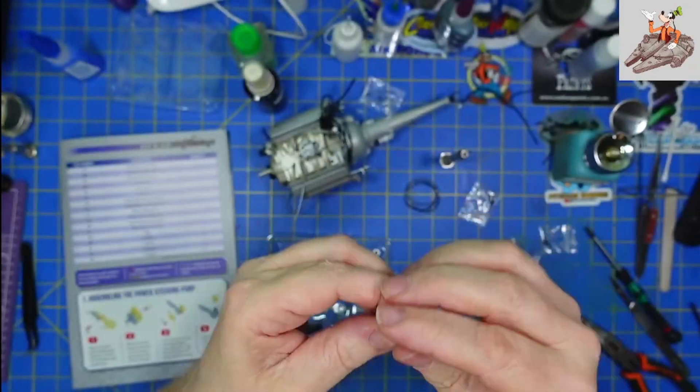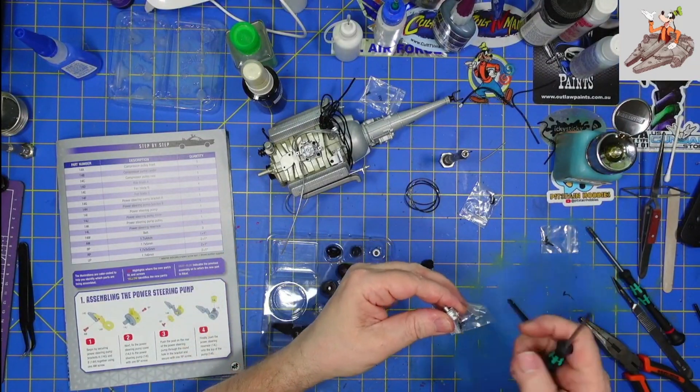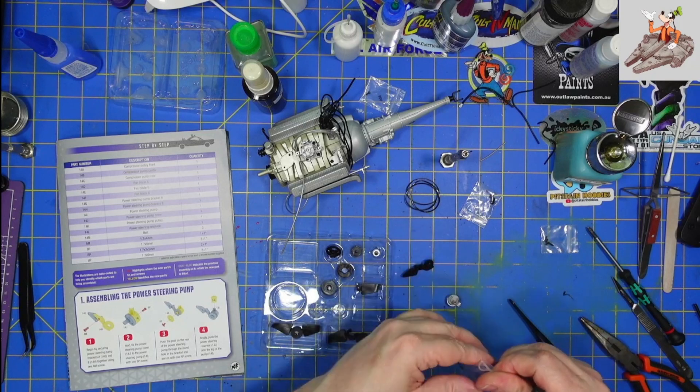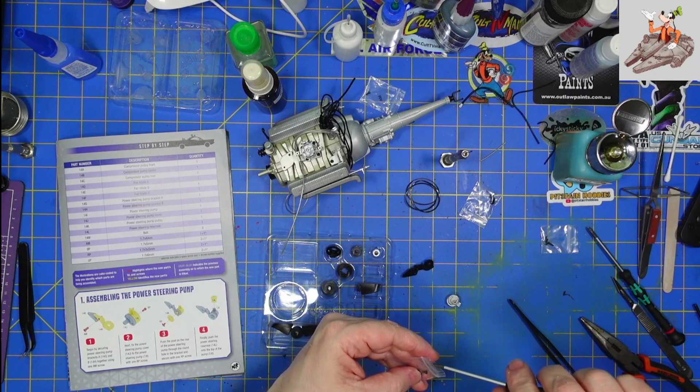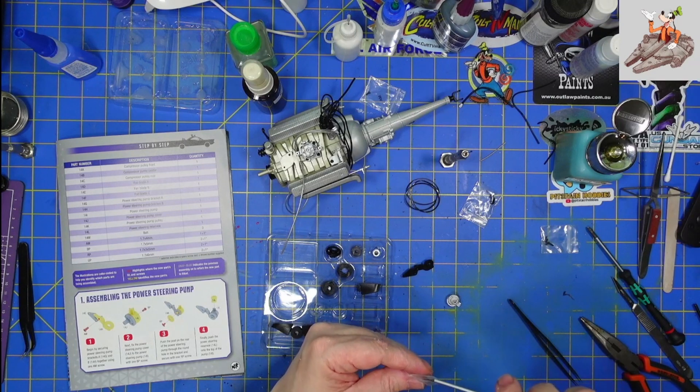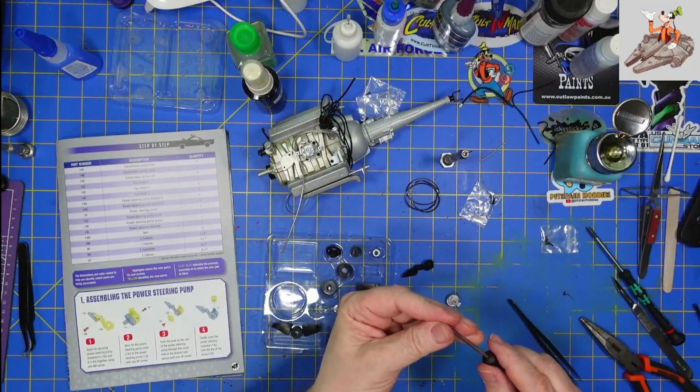And the screw, a BP screw, is going to go in from the back side. There's only one BP screw. So that screw will be, the second screw will be a spare. There are two screws themselves. The second one will be a spare.